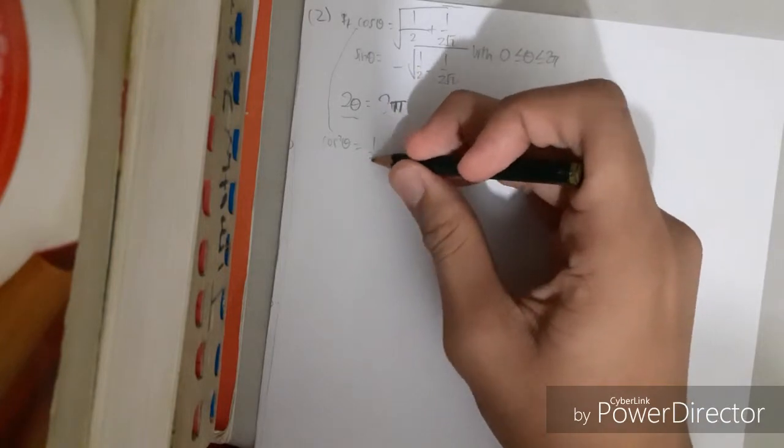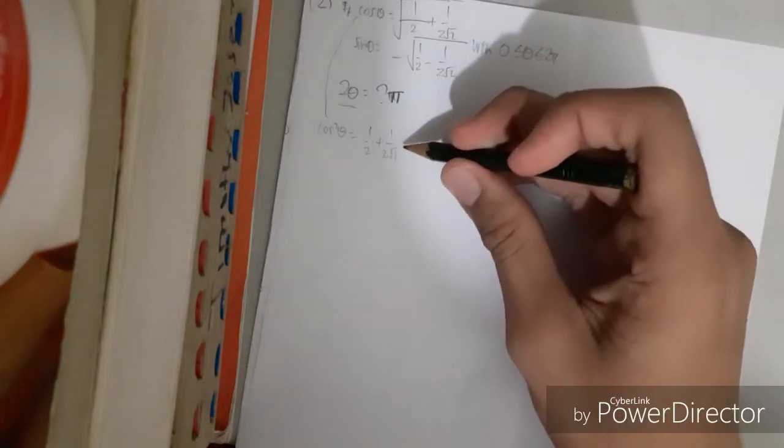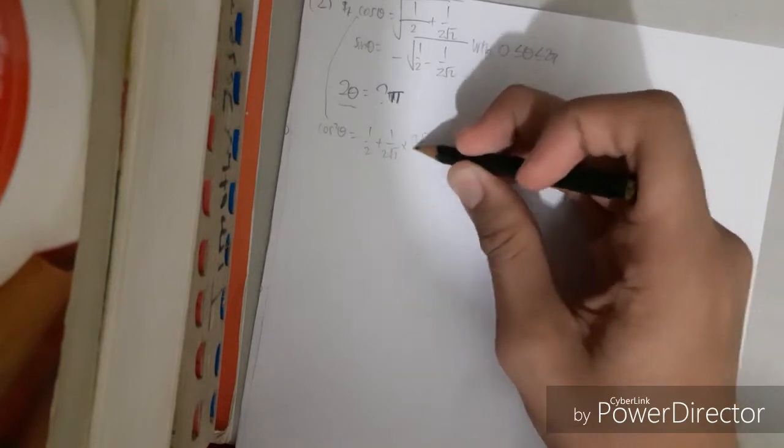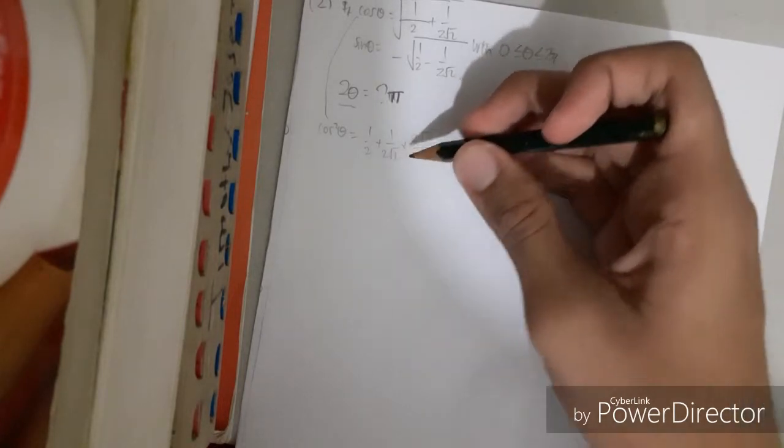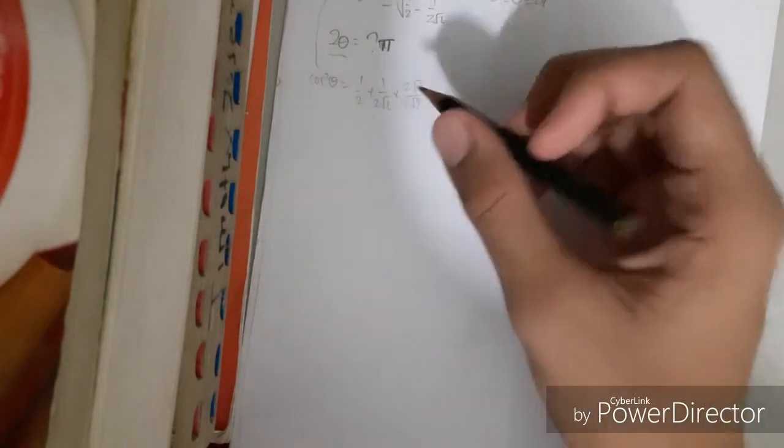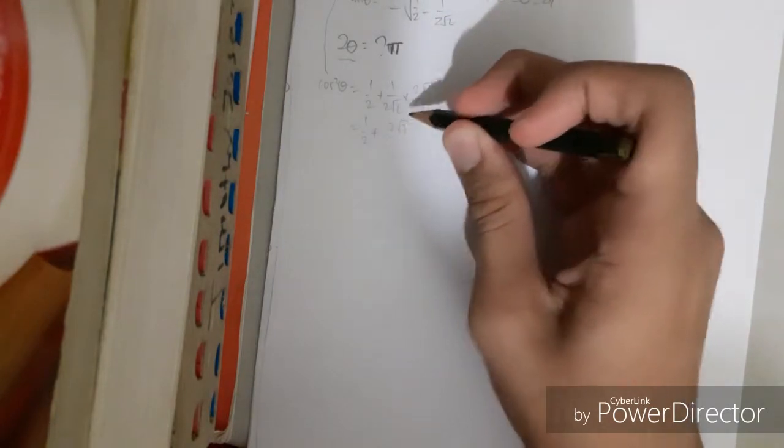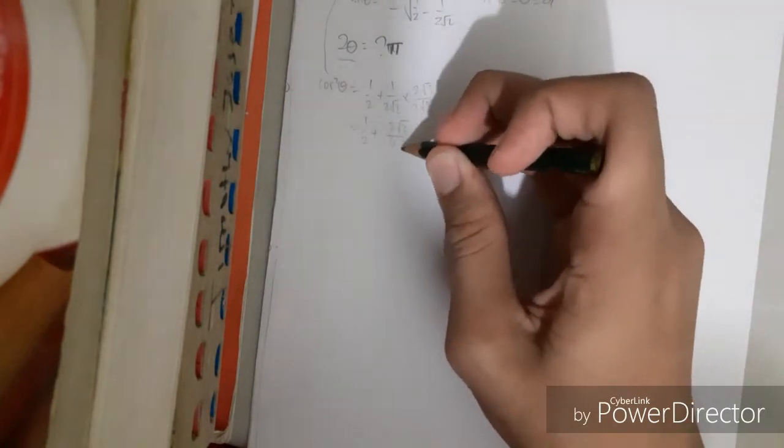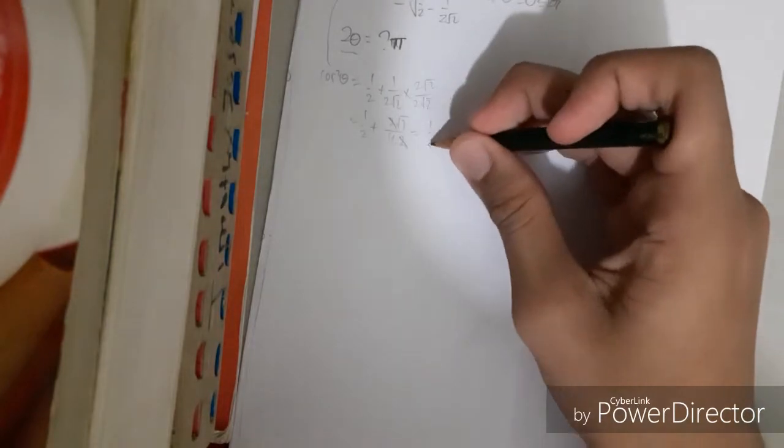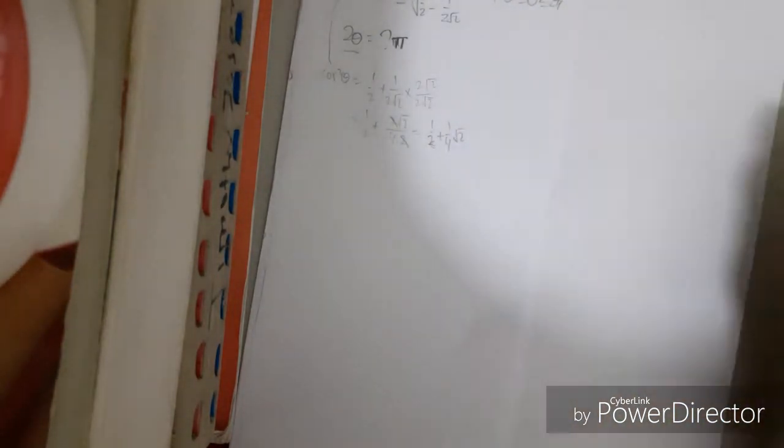You should always rationalize the root here if there is a fraction with root in the denominator. If you don't know how to rationalize, let me show you. It's half plus 1 over 2 root 2, and remember, multiplying by root 2 over root 2 gives 1 half plus 1 fourth root 2.